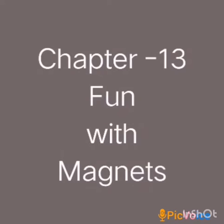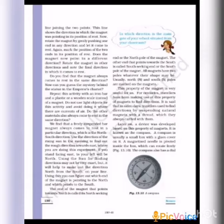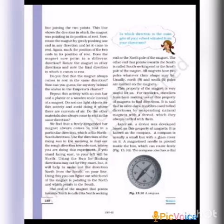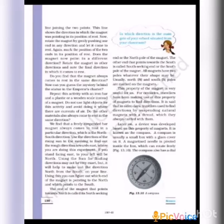Class 6 Physics, Chapter 13: Fun with Magnets. In the last class we discussed finding directions. Activity 5: take a bar magnet and freely suspend it in a wooden stand. The bar magnet rotates and comes to rest only in the north-south direction. In a plastic scale, wooden scale, or pencil, it also comes to rest in different directions, but the magnet always rests in the north-south direction.